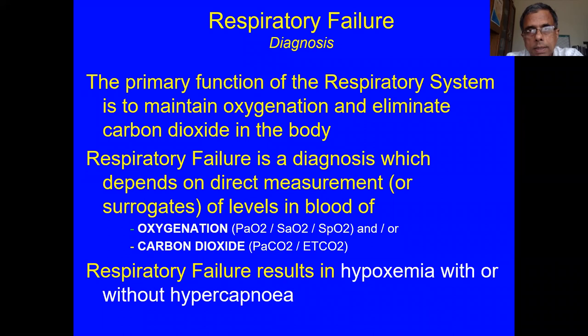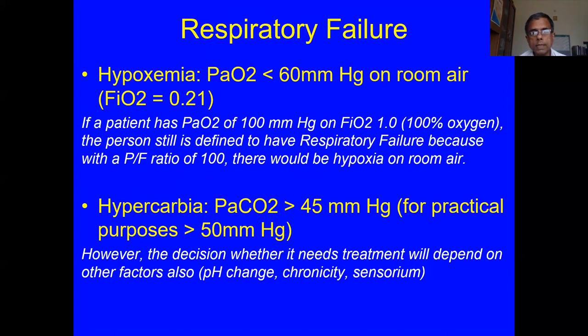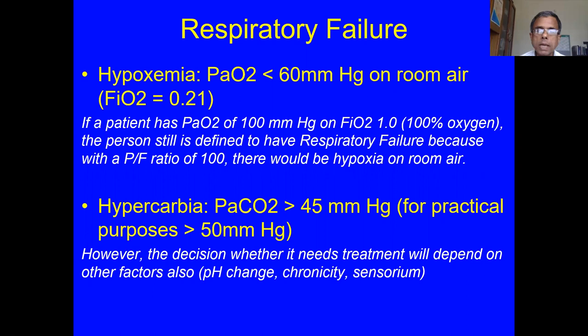You diagnose respiratory failure based on a test — it is not just a clinical diagnosis. Respiratory failure hypoxemia is defined as PO2 less than 60 on room air. This is important: if a person has a PO2 on 100% oxygen but it should be much higher than that, he is still considered to be in respiratory failure. You don't actually have to put the patient on room air — you can use the PF ratio, calculate it, and determine the person likely has a PO2 less than 60 on 21% oxygen.